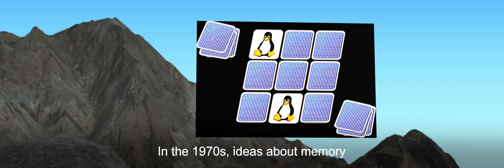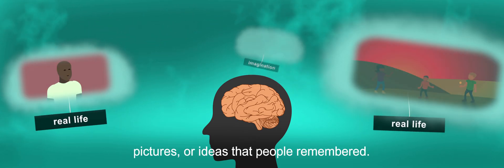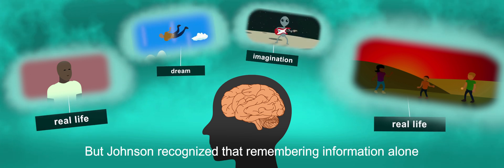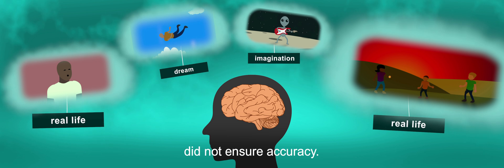In the 1970s, ideas about memory emphasized storing and retrieving information derived from what we perceive. Most research focused on the number of words, pictures, or ideas that people remembered. But Johnson recognized that remembering information alone did not ensure accuracy.